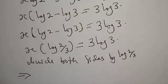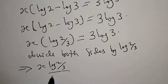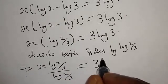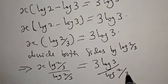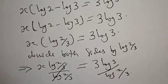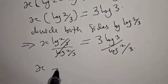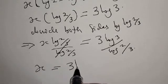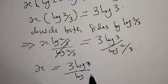This implies that x log 2 over 3, divided by log 2 over 3, will be equal to 3 log 3 over log 2 over 3. This is equal to 3 log 3 over log 2 over 3.